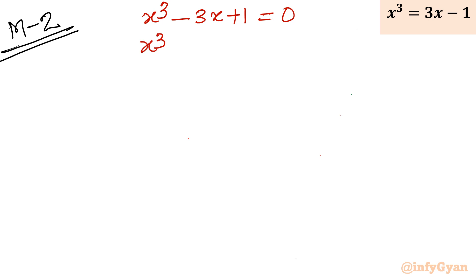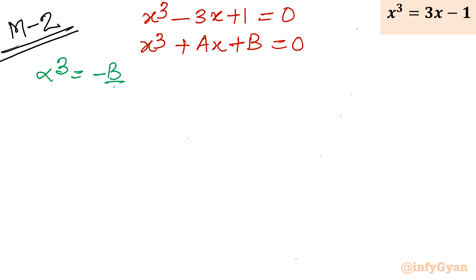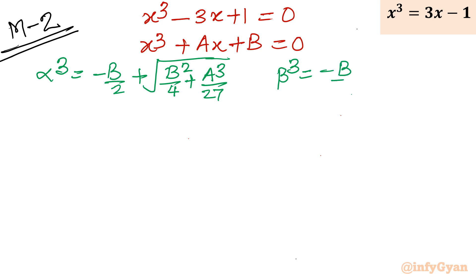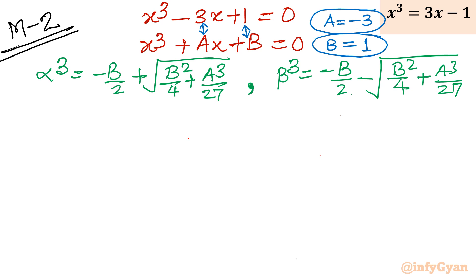Writing our equation again: x³ - 3x + 1 = 0. Comparing with the standard depressed cubic form x³ + ax + b = 0, since it is already in depressed form, no transformation is needed. By comparison, a = -3 and b = 1. Now I will directly use the Cardano formulas.